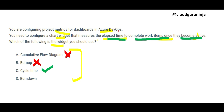Burn down tells you what work is still pending, while burn up tells you the list of work that is complete.